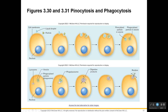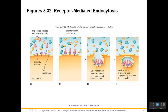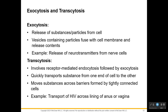Exocytosis is where we take waste, digestive products, or something we no longer need — or even a product we've made, like proteins in milk secretion — and the vesicle binds with the membrane and releases things out of the cell. In receptor-mediated endocytosis, we're looking for specific things only, and when those molecules bind with receptors, the cell knows to engulf them. Exocytosis also happens in nerve cells when they release neurotransmitters to communicate with your muscles to cause movement.